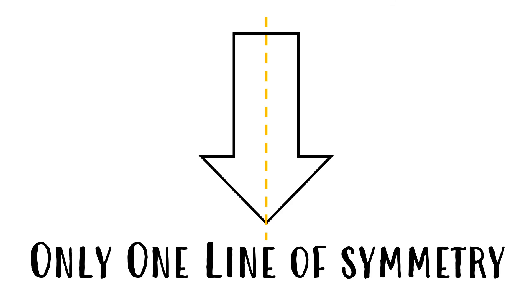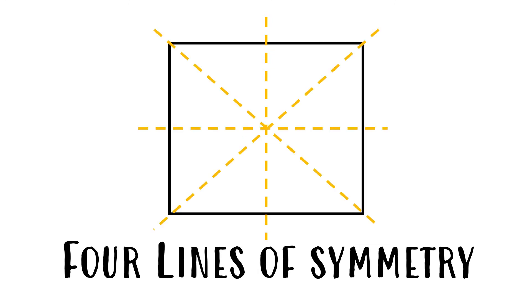Only one line of symmetry. This arrow only has one line of symmetry. This square has four lines of symmetry.